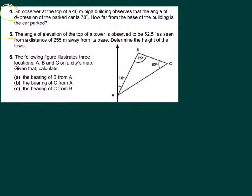Let's read the problem. The angle of elevation of the top of a tower is observed to be 52.5 degrees as seen from a distance of 255 meters away from its base. Determine the height of the tower.